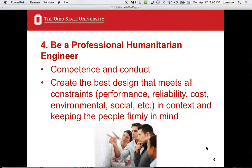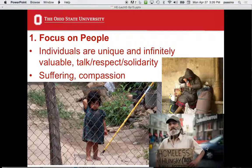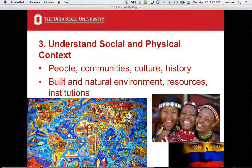Principle four: be a professional humanitarian engineer. Professionalism is basically defined as competence and conduct. Competence means what you'd expect for engineering: technical competence in science, math, and technology. If you're really competent, you exceed the minimum for a project — you've got a lot of depth in every direction. When you think about building competence, you don't think about the next homework assignment; you go back to the goal: getting it right for people. That's why you want to be competent.